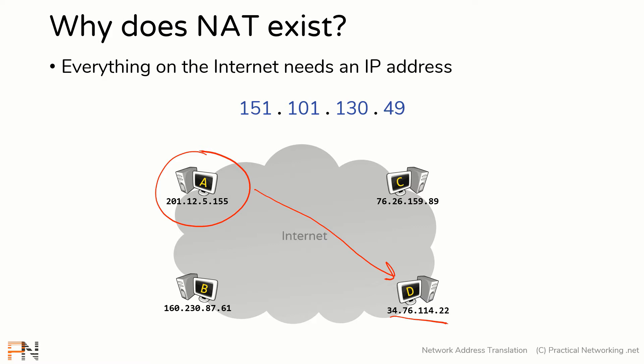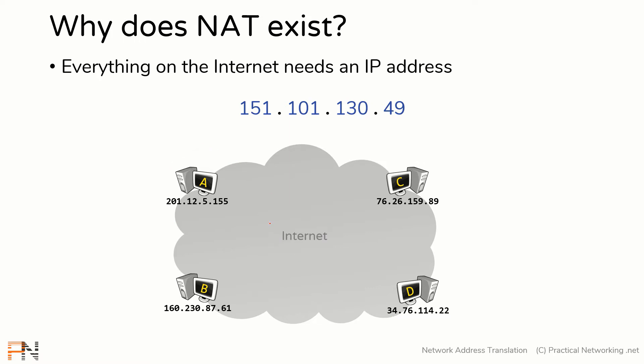Moreover, since host A also has an IP address, it can provide the source IP address to host D so that host D can respond back to the original sender. That's how the devices on the internet communicate using these IP addresses.